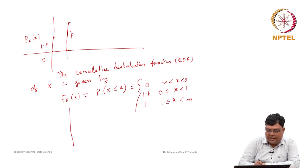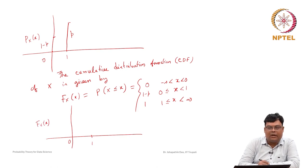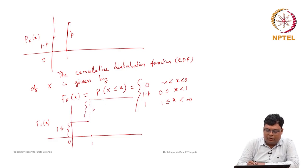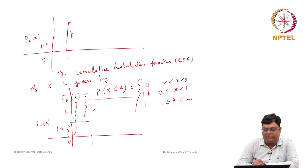Graphically, the CDF is a step function: it stays at 0 until x = 0, then jumps up by 1−P at x = 0, stays flat until x = 1, then jumps up by P to reach 1. Since this is a discrete random variable, the CDF is always a step function.